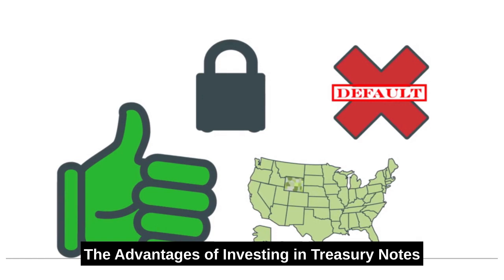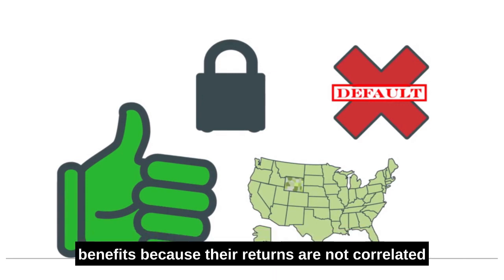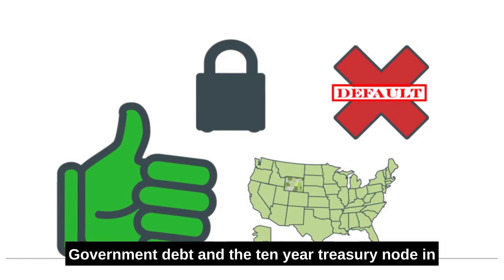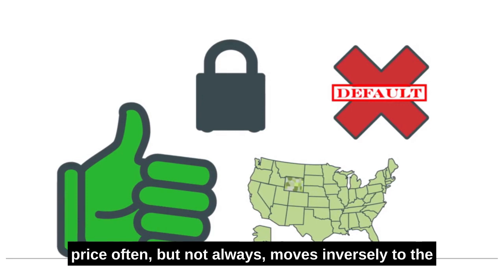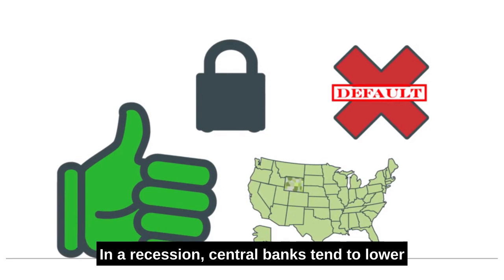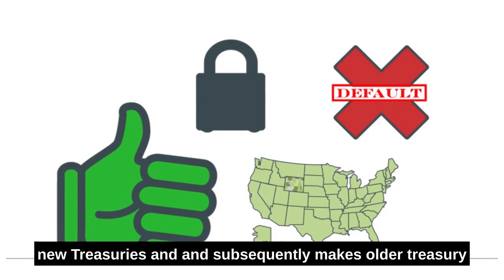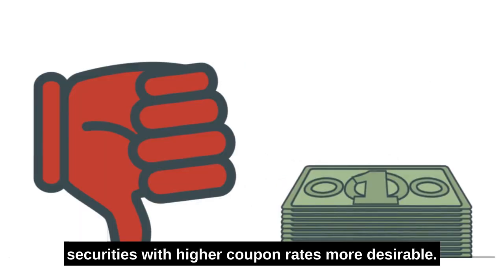The Advantages of Investing in Treasury Notes. Fixed-income securities offer important portfolio diversification benefits because their returns are not correlated with the performance of stocks. Government debt, and the 10-year Treasury Note in particular, is considered a relatively safe investment, so its price often — but not always — moves inversely to the trend of the major stock market indices. In a recession, central banks tend to lower interest rates, which lowers the coupon rate on new Treasuries and, subsequently, makes older Treasury securities with higher coupon rates more desirable.